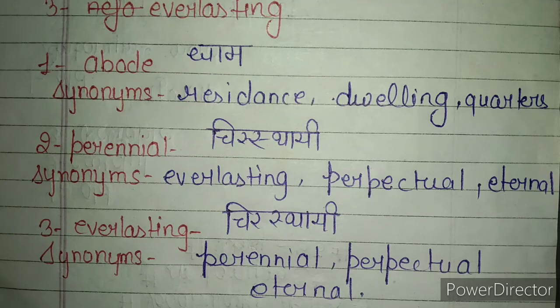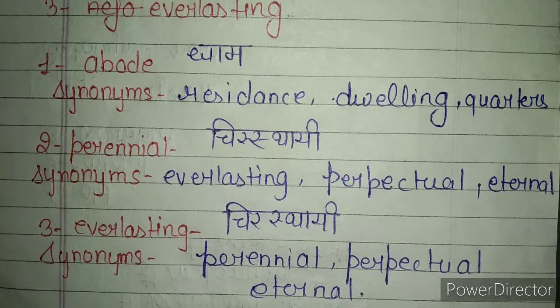The third word is everlasting. Everlasting का भी मतलब होता है चीरिस्थाई — जो हमेशा रहे। इसके synonyms यूज़ कर सकते हैं: perennial, perpetual, and eternal.